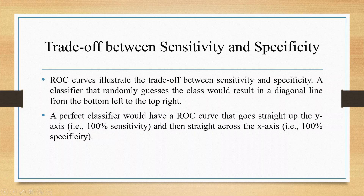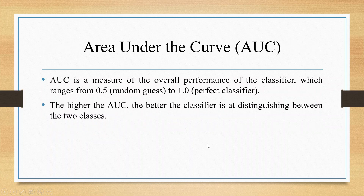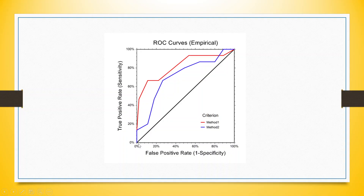A perfect classifier would have an ROC curve that goes straight up the y-axis and straight across the x-axis. This is a very idealistic situation — it means we are able to classify the cases 100%, which is not possible in practice.